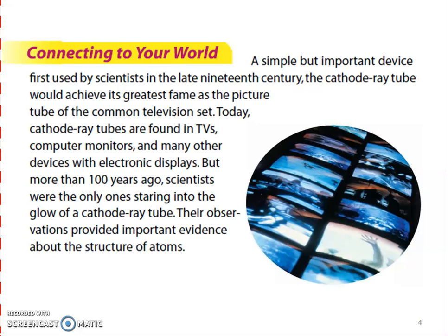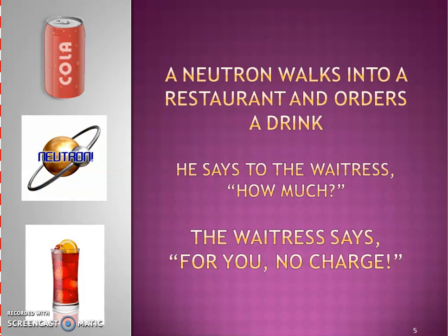A simple but important device, first used by scientists in the late 19th century, the cathode ray tube would achieve its greatest fame as the picture tube of the common television set. Today, cathode ray tubes are found in TVs, computer monitors, and many other devices with electronic displays. But more than 100 years ago, scientists were the only ones staring into the glow of the cathode ray tube. Their observations provided important evidence about the structure of atoms.